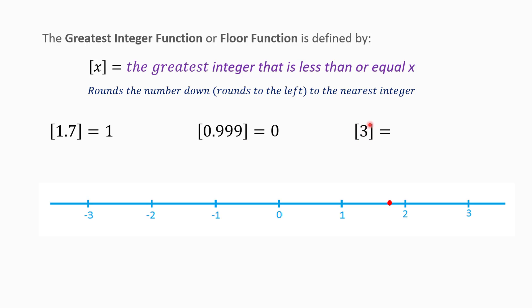Another example: what is the greatest integer of 3? Because 3 itself is an integer, the greatest integer of 3 is equal to 3. The greatest integer of any integer number is equal to itself. Another example: what is the greatest integer of negative 1.2? On a number line, if we run this number down to the nearest integer, the greatest integer of negative 1.2 is negative 2.